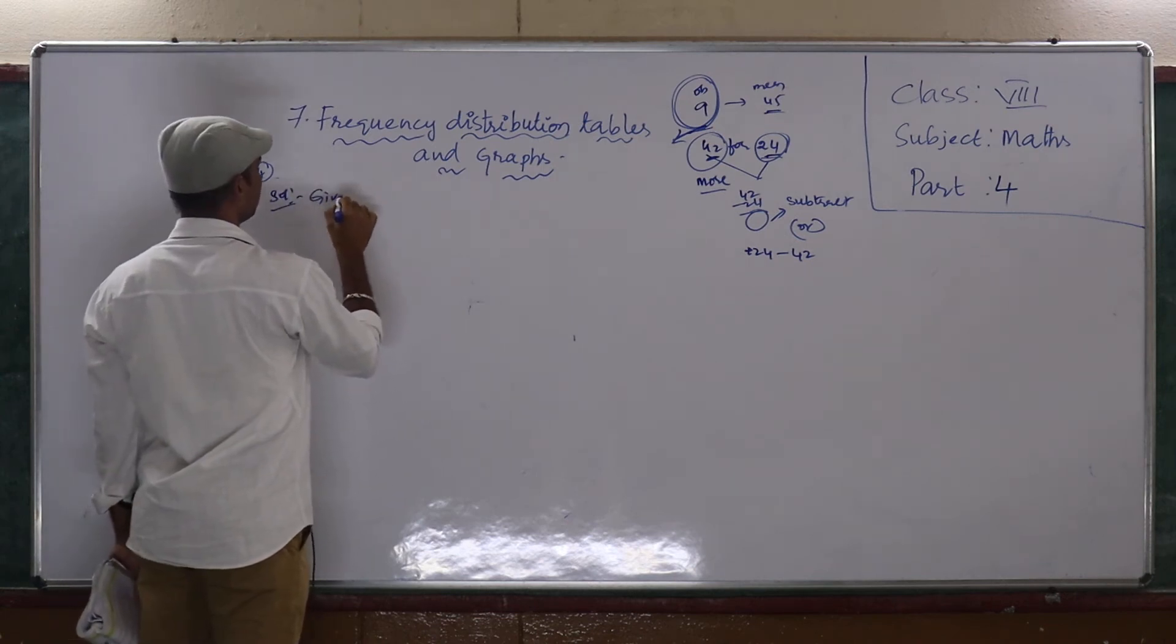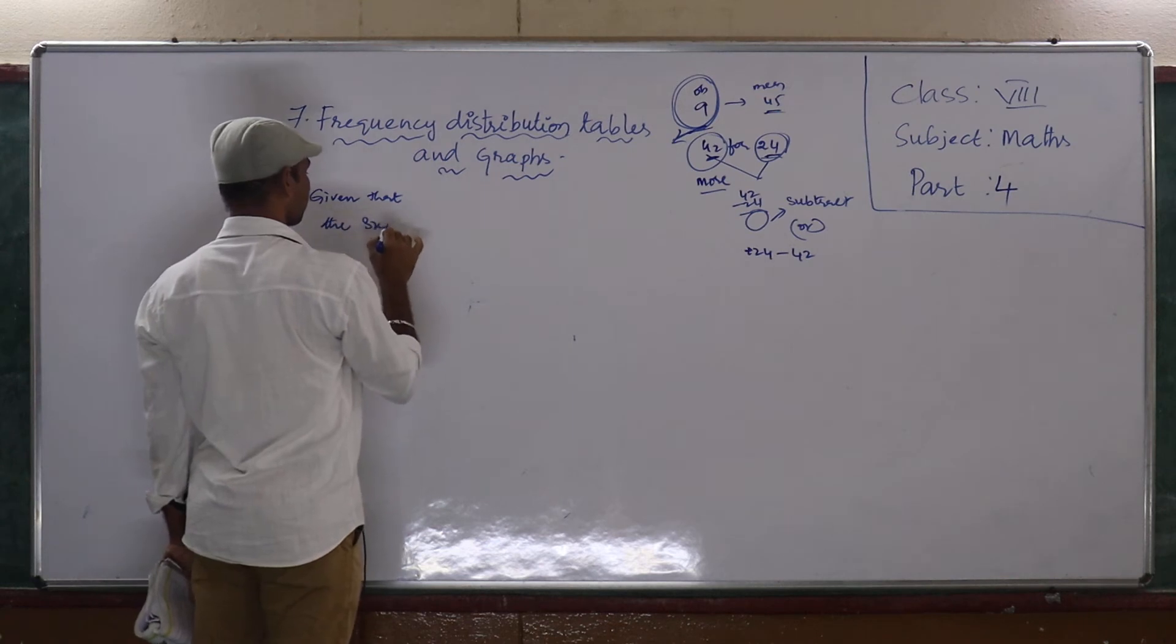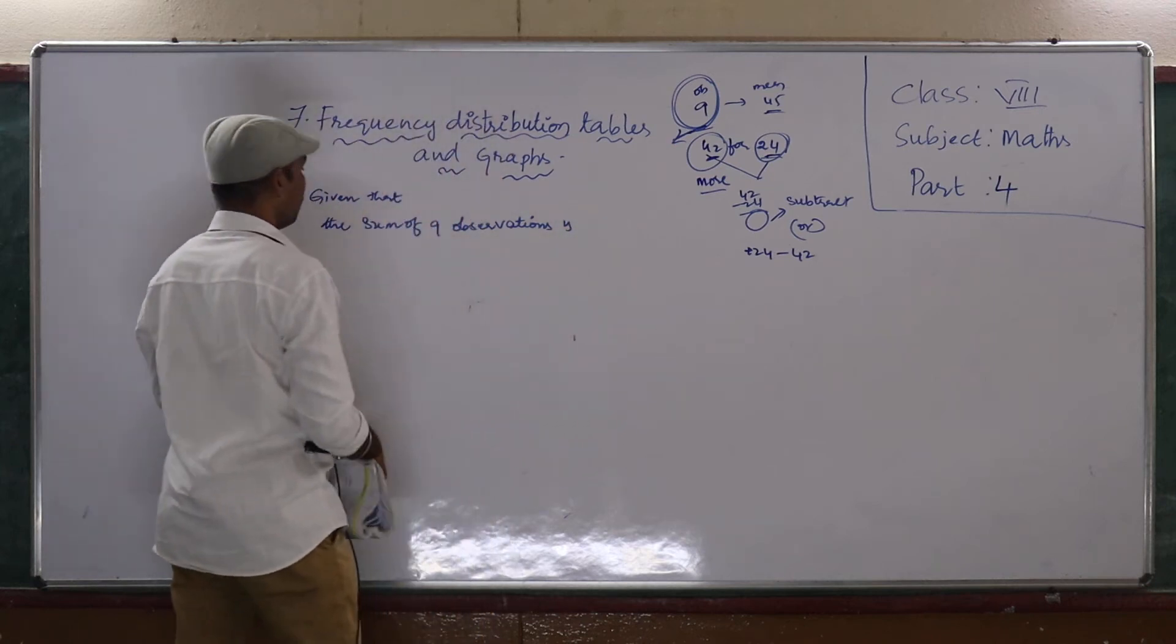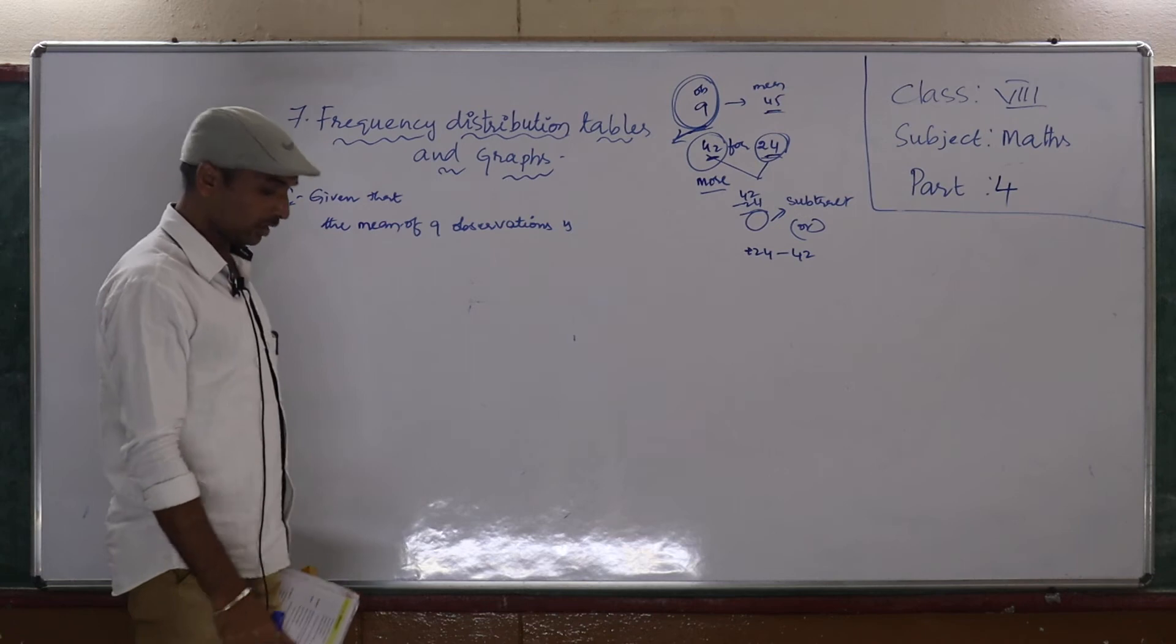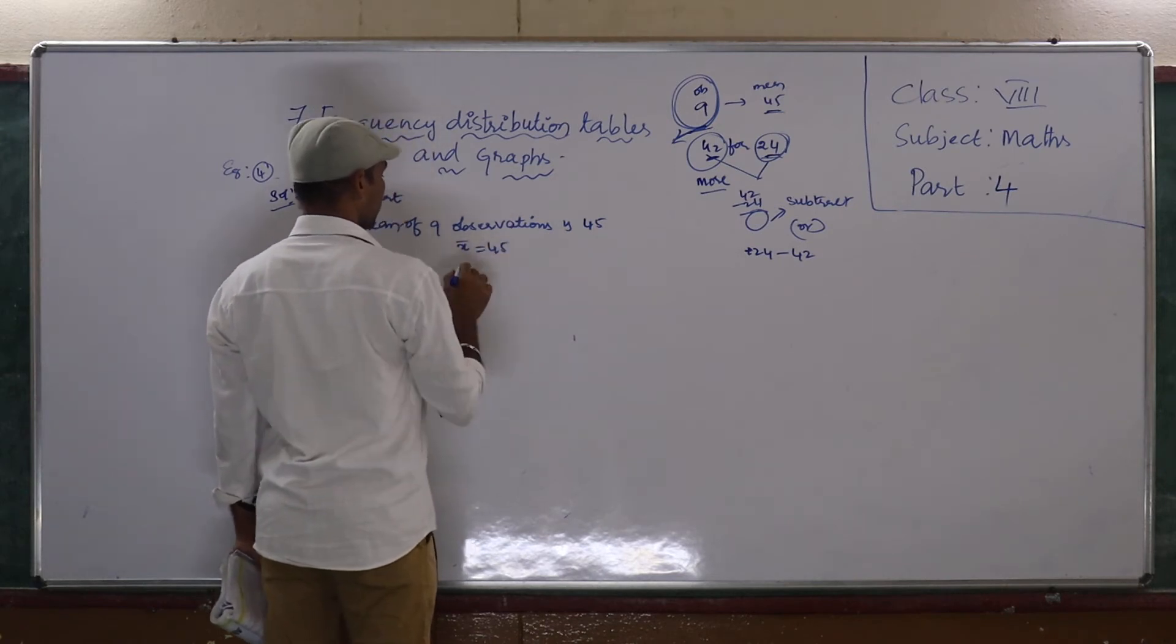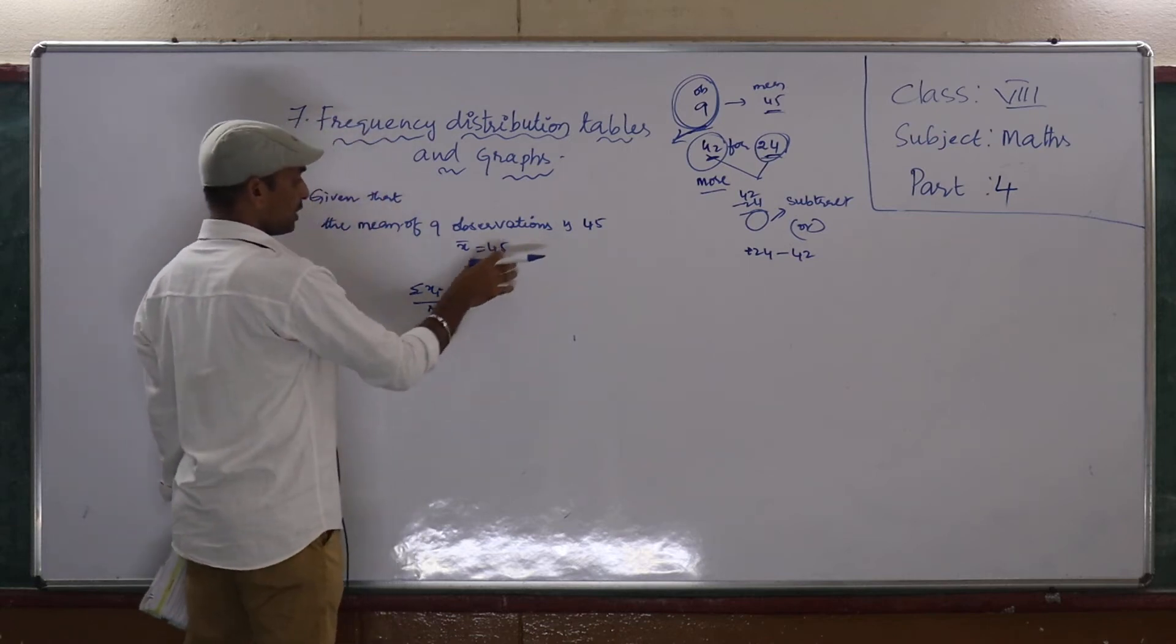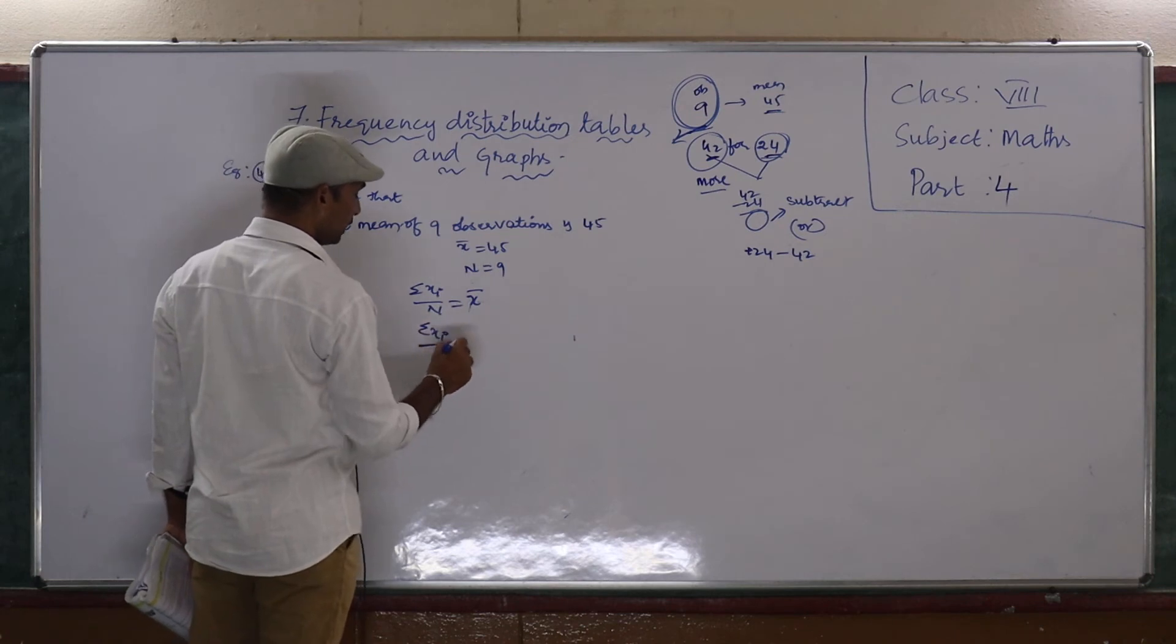Given that the mean of 9 observations is 45. Means, x bar is equal to 45, then n is equal to 9. Now, we know that formula sigma xi by n is equal to x bar. If you substitute here, sigma xi by n value 9, x bar 45.